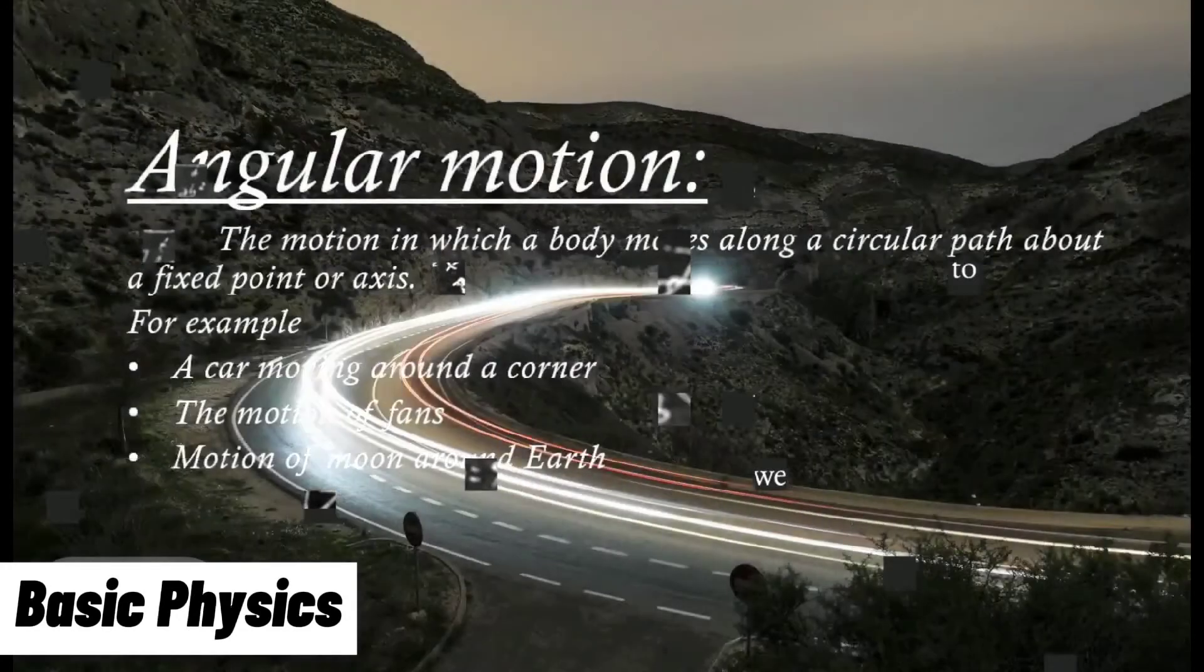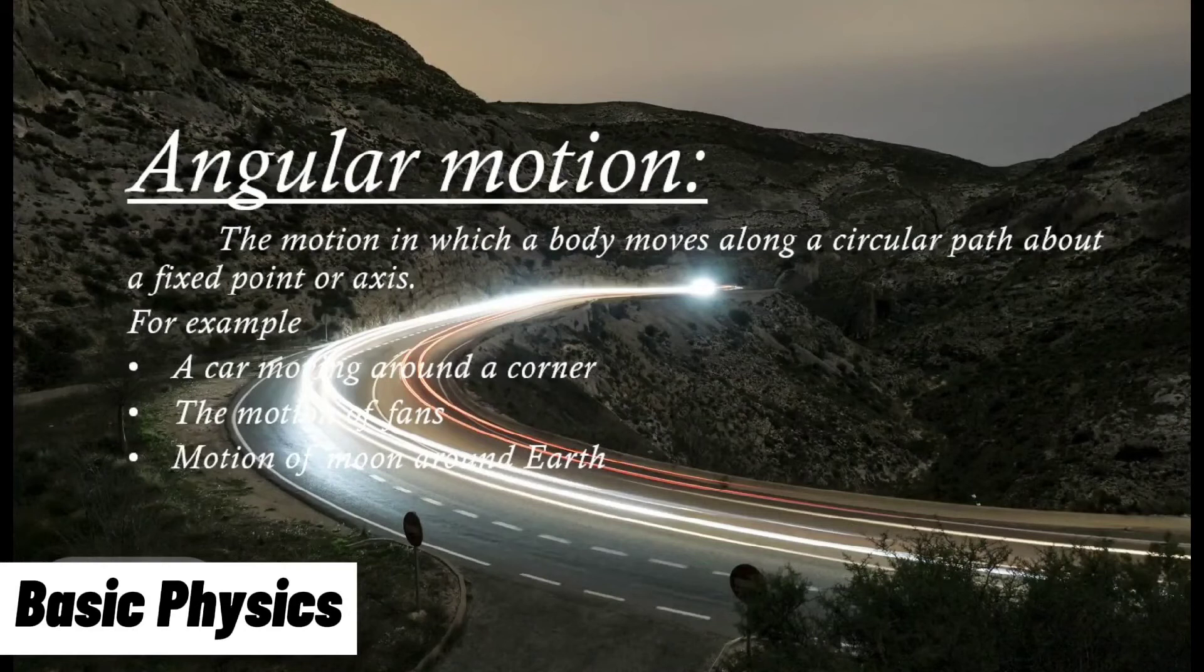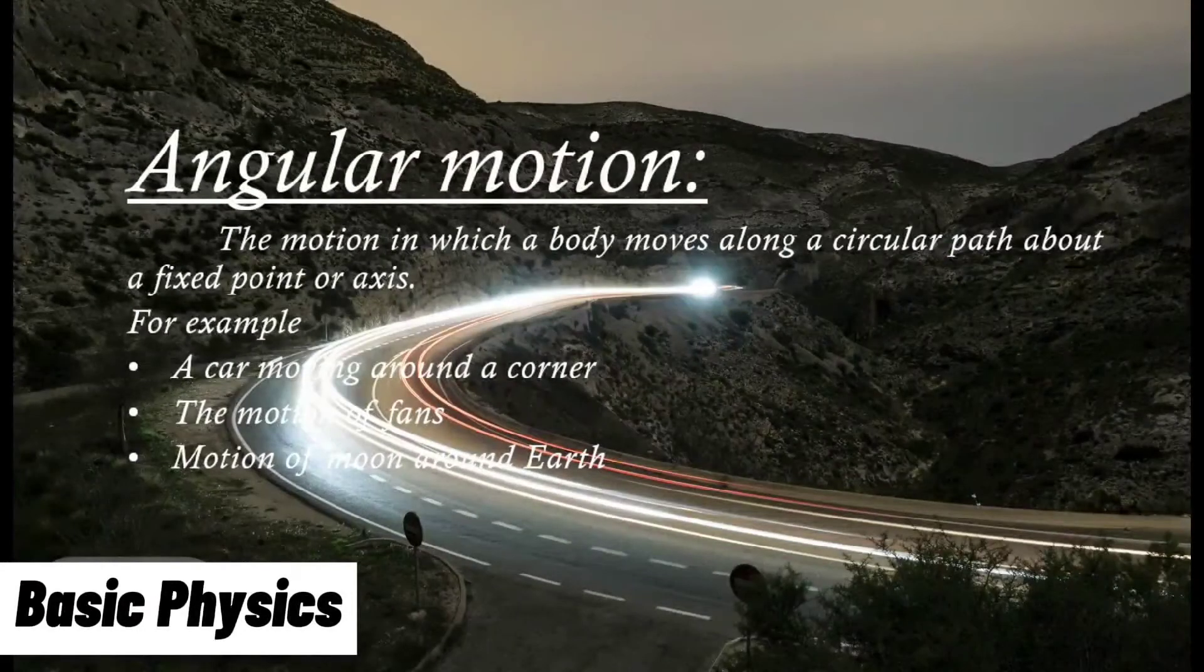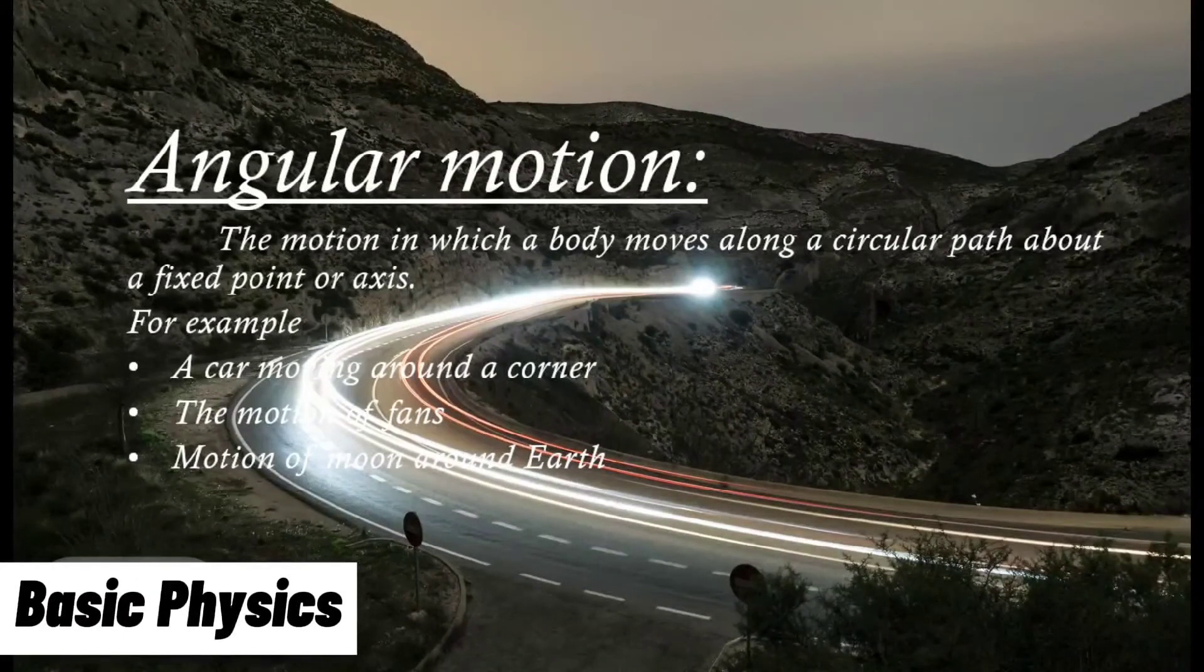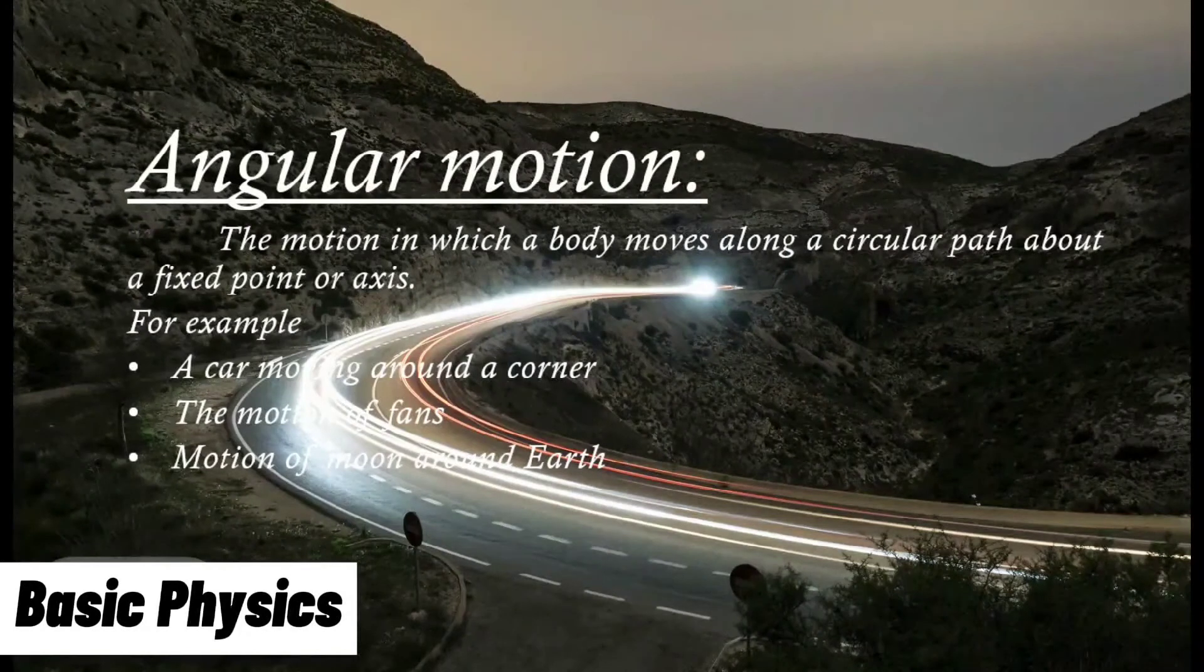Angular motion: The motion in which a body moves along a circular path about a fixed point or axis. For example, a car moving around a corner, the motion of fans, motion of moon around Earth.